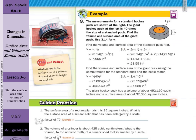In our last guided example, the measurements for a standard hockey puck are shown at the right. The giant hockey puck at left is 40 times the size of the standard puck. Find the volume and surface area of the giant puck. Well, for volume, we actually went through pi r squared h, and then surface area 2 pi r squared plus 2 pi r h. We found the volume and the surface area, so we actually had to calculate it in this one.